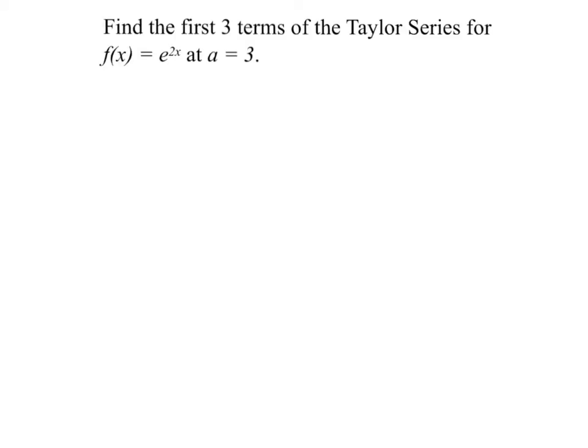So let's start with that general thing about Taylor series. I'm going to write it down here. It's the nth derivative evaluated at a over n factorial, and then x minus a to the nth power. Remember, it always starts at 0 and goes to infinity.